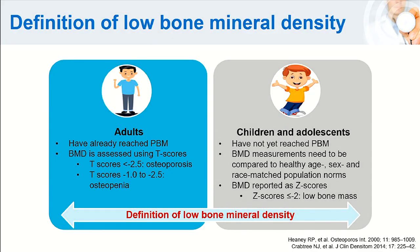We must clarify that the definition of low bone mineral density differs between adults and children. Because adults have already reached adult peak bone mass, their bone mineral density assessment uses T-scores, where below minus 2.5 determines osteoporosis and between minus 1 to minus 2.5 determines osteopenia. For children and adolescents, who have not yet reached adult peak bone mass, bone mineral density is compared with healthy age- and sex-matched individuals and expressed as Z-scores. A Z-score at or below minus 2 determines low bone mineral density in this population.